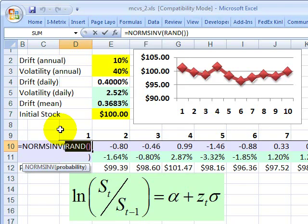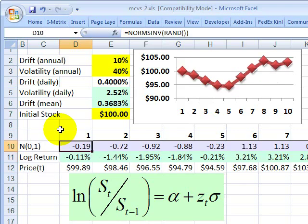It's going to give me a value generally between negative three and three.